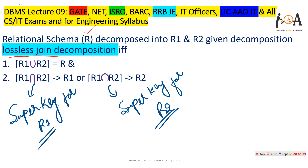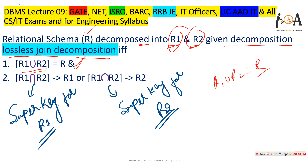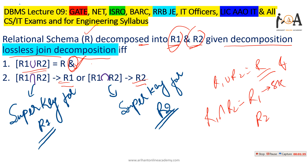In a relational schema decomposed into relations R1 and R2, the decomposition will be a lossless join if: first, R1 union R2 equals R (the complete relation), and second, R1 intersection R2 is either R1 or R2, and that intersection should be a super key of R1 or R2 respectively. We will continue with examples so you understand it better.